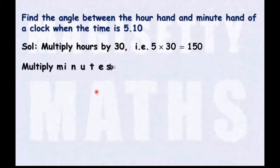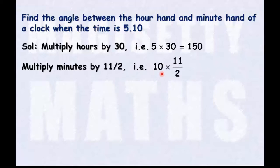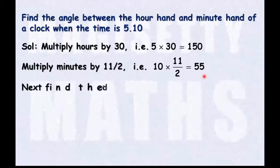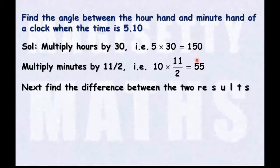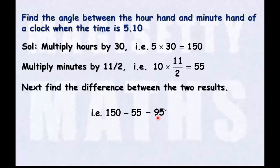And, multiplying the minutes by the fraction 11/2. Here we have given 10 minutes. Multiplying 10 minutes by the fraction 11/2, we get 55. And then, finding the difference between these 2 results, we get 150 minus 55, that equals 95 degrees. So this is the angle between the hour hand and minute hand of a clock when the time is 5 hours 10 minutes.